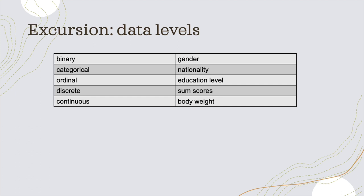For example, on a questionnaire with a scale from one to five, if someone answers item one with five, item two with two, and item three with four, the sum across items is 11. These values can only take whole numbers — it cannot be 11.1, for example.